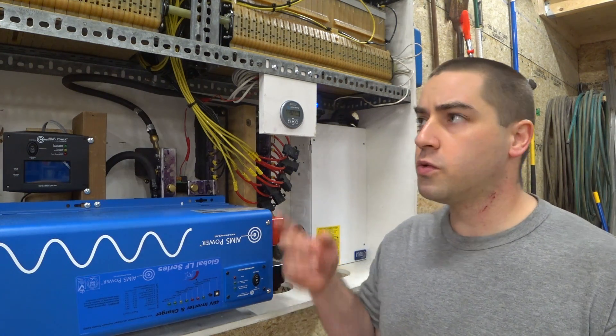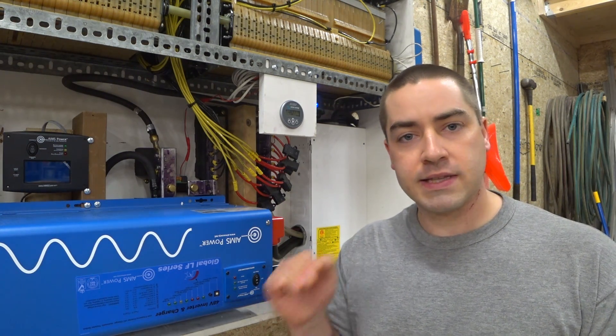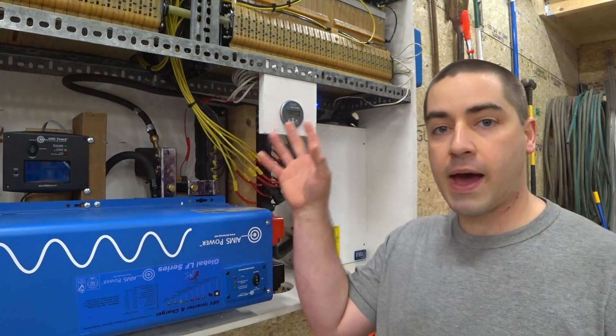So what I am choosing to do with these batteries is set them to 4.1 volts per cell as the high limit that I'm going to stop charging them at. That works out to 49.2 volts for the pack, because I have these arranged in 12S or 12 cells in series.